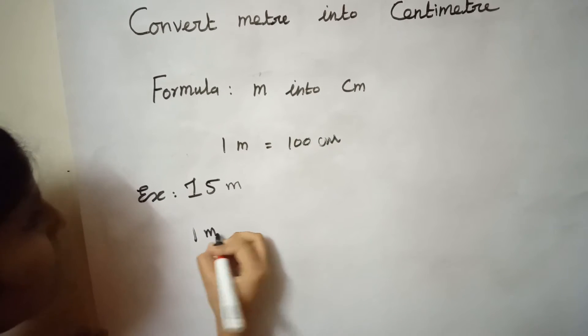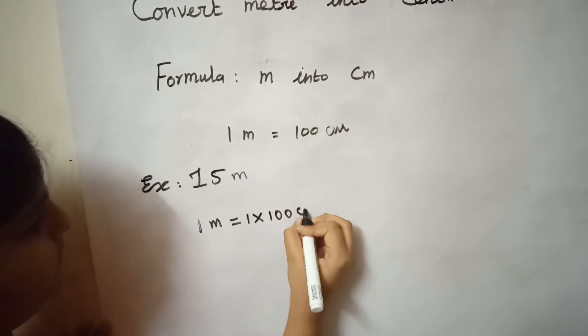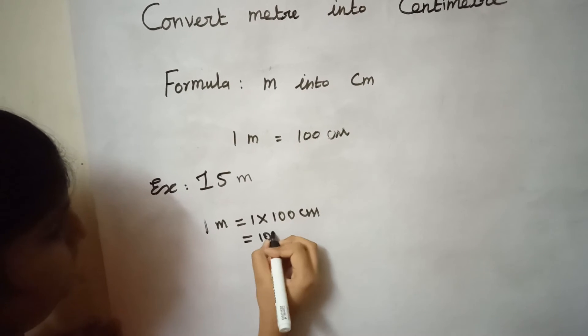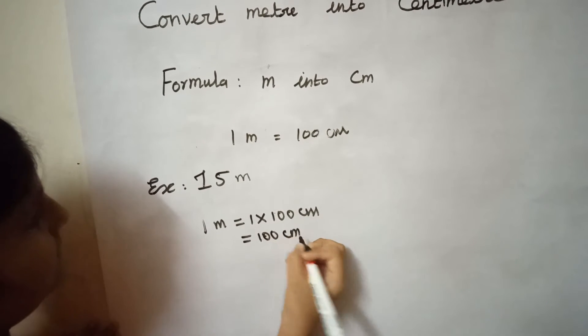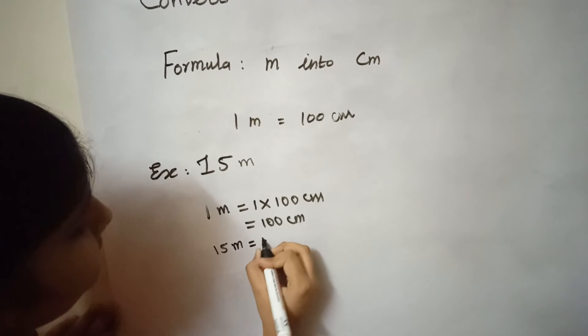1 meter is equal to 1 into 100 centimeters, which is 100 centimeters. So 50 meters is equal to 50 into 100 centimeters.